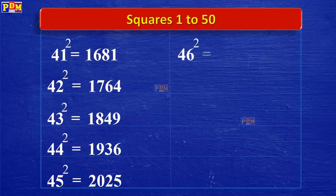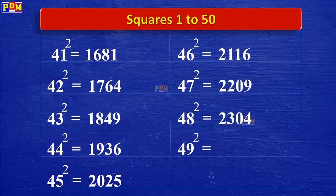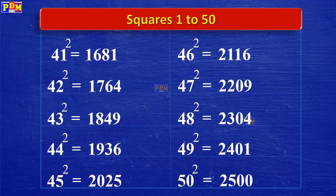46 squared is 2,116. 47 squared is 2,209. 48 squared is 2,304. 49 squared is 2,401. 50 squared is 2,500.